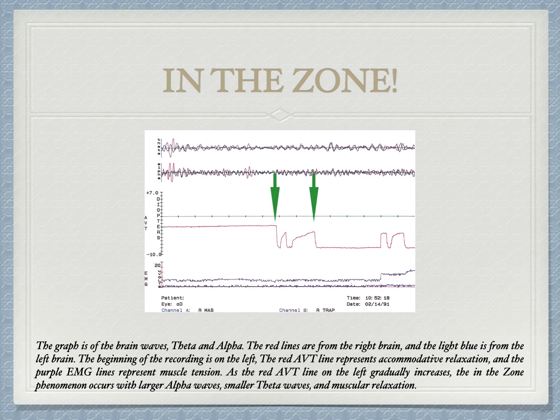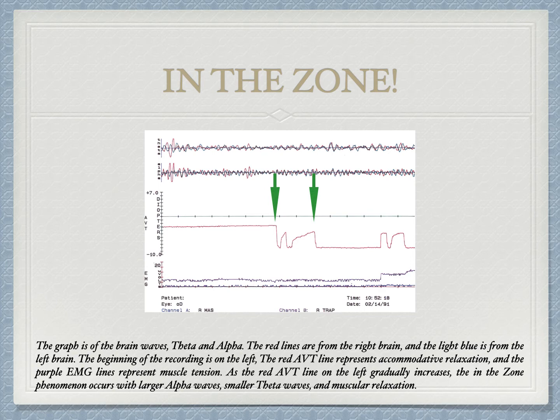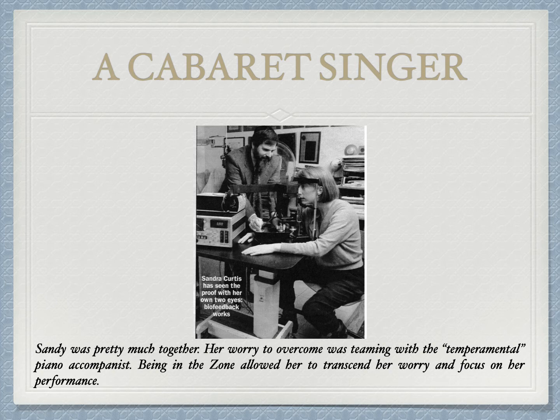This graph shows the simultaneous recording of muscle tension on the bottom (the EMG scale), eye focusing (AVT) on the middle scale, and brainwaves on the top scale. The two green arrows show where there is sustained relaxation of eye focusing, a subsequent increase in the alpha brainwave, and a decrease in EMG showing muscular relaxation. It is the alpha brainwave that puts people in the zone with parallel processing and a dramatic increase in situational awareness. Being in the zone also leads to general relaxation.